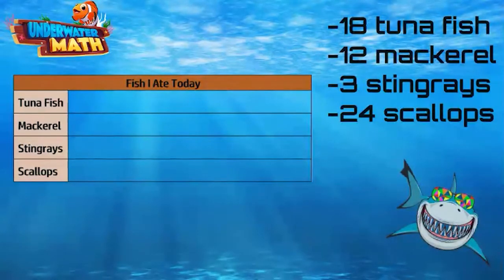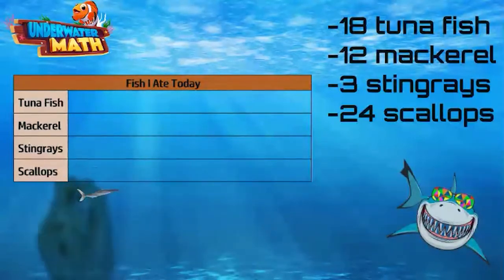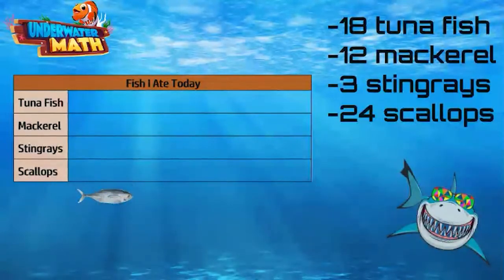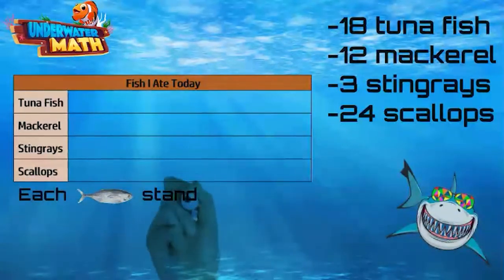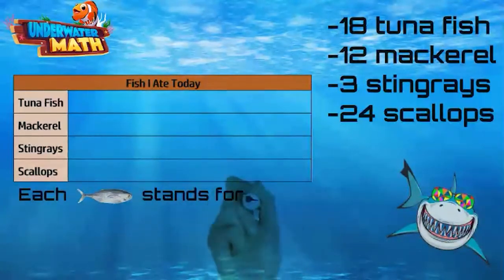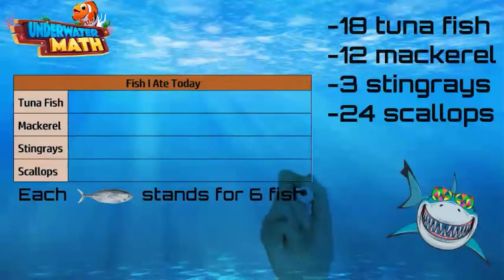Anyways, let's use a picture of a fish for our pictograph. Since almost all of our values are divisible by six, we will make every fish picture represent six fish that you ate.